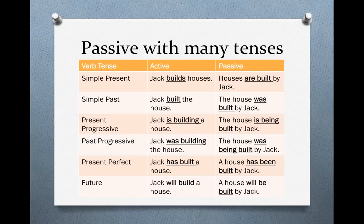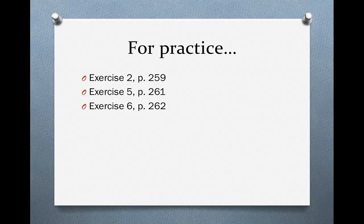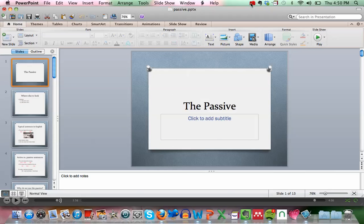If we go back and look at this chart — students always find this confusing, but the easiest way to learn the passive is to memorize it. Study and memorize: simple present → are; simple past → was; present progressive → is being; past progressive → was being; present perfect → has been; future → will be. If you memorize it, you will always get the answers right on any quiz or test. For more practice, do exercise 2 on page 259, exercise 5 on page 261, and most importantly exercise 6 on page 262, and exercise 208 on page 272.